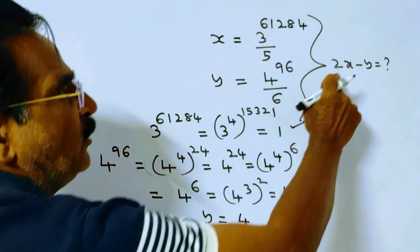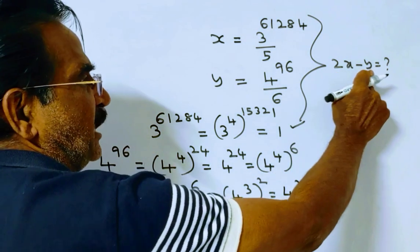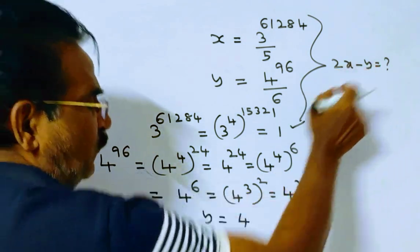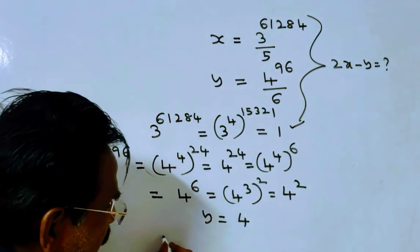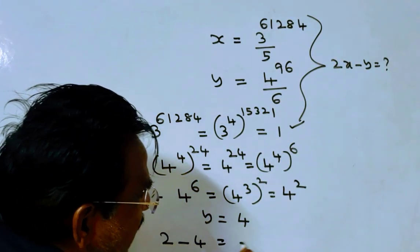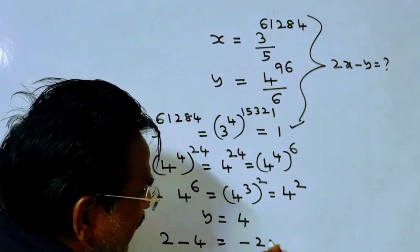So we want the value of 2x minus y. 2 into 1, minus 4. 2 minus 4 is equal to minus 2.